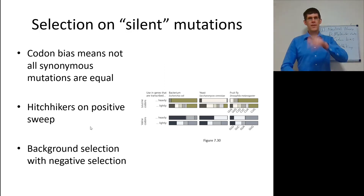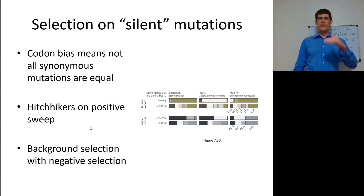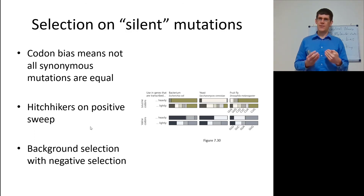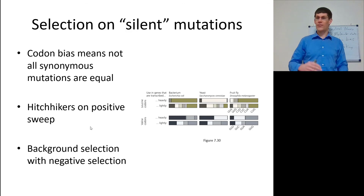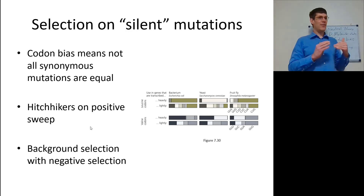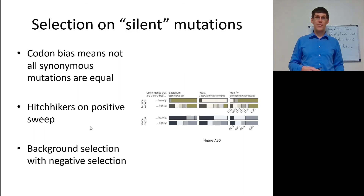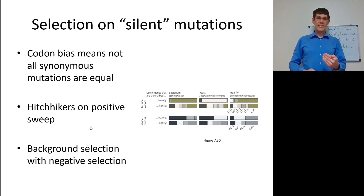A positive sweep can even result in the fixation of deleterious alleles. If a highly beneficial allele with a large selection coefficient sweeps to fixation in three generations in a small population, a nearby deleterious allele can go to fixation too — if it's not as bad as the beneficial allele is good. There's also background selection with negative selection: if something gets swept out of the population, so does everything nearby. A neutral allele next to a lethal allele is not traveling to the next generation.